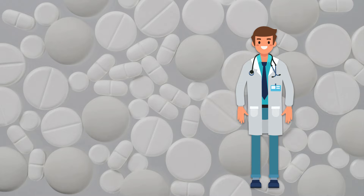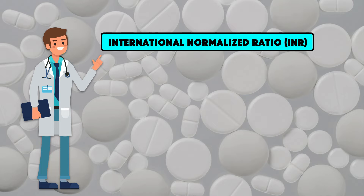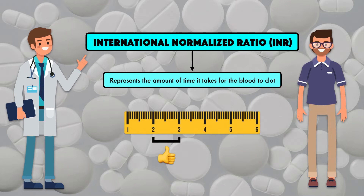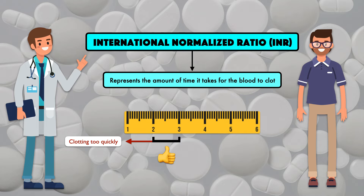Thankfully, the degree to which blood clotting is happening is never left up to speculation. Instead, it can be monitored using the International Normalized Ratio, or INR, which represents the amount of time it takes for the blood to clot. Patients on warfarin are usually asked to maintain a target INR of 2 to 3. An INR less than 2 means the blood is clotting too quickly and the patient is at risk of unwanted clotting. An INR greater than 3 means the blood is not clotting quickly enough and the patient is at risk of bleeding.